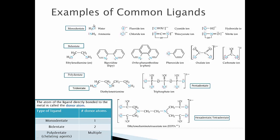For bidentate ligands, ethylenediamine is the most common. It has two nitrogens with lone pairs, so when it binds to a metal the nitrogens coordinate twice — one on each side of the metal. If the metal can hold four donor groups, ethylenediamine takes two of those spots and water takes one. Other bidentate examples include bipyridine, ortho-phenanthroline, phenoxide, oxalate, and carbonate.